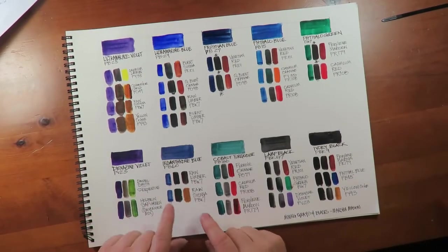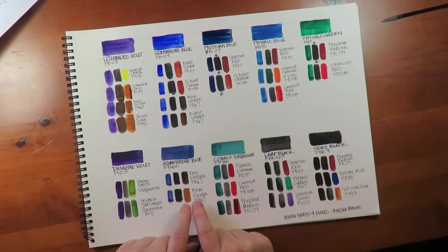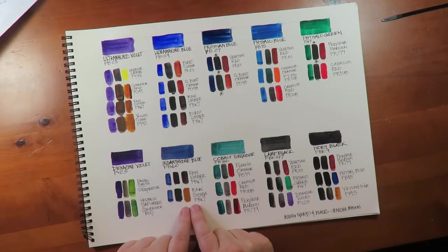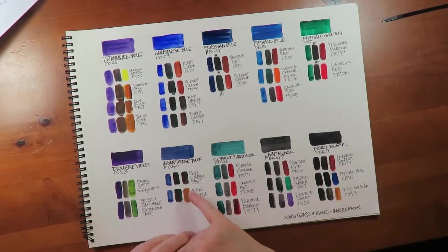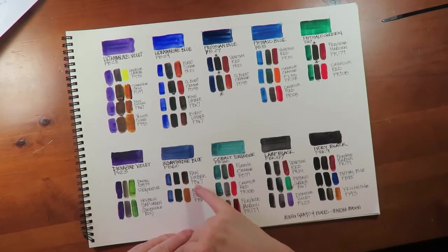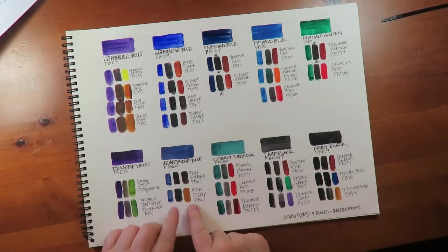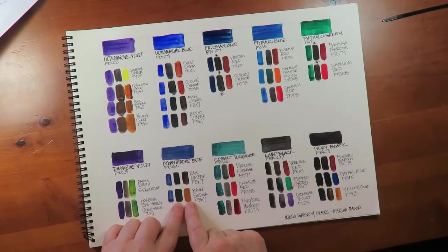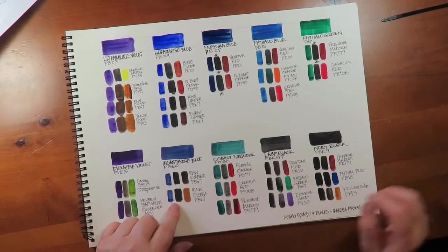Moving on down to indanthrone blue, I always think of this as a great basis to make denim color when you mix a little black into it. The umber, the raw umber and sienna, isn't it interesting how this lighter color makes just as dark of a black as this darker mixing complement.